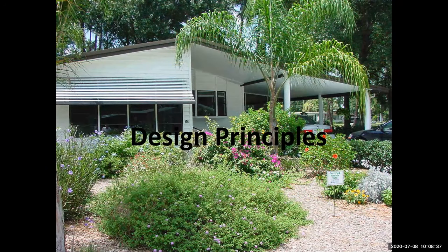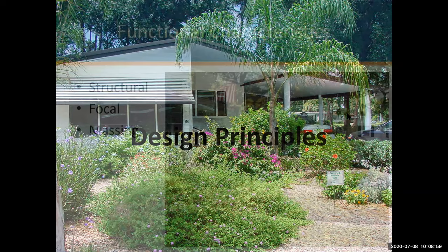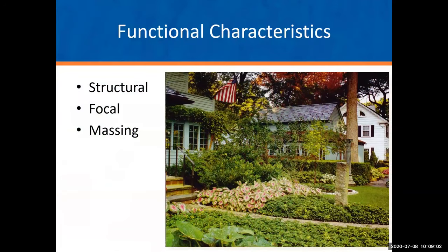Today we're going to talk about design principles. Design principles are the visual qualities that make up a landscape — both what people see and what they feel when observing the landscape. It's the more artistic side of landscape design. We'll have some good pictures today to demonstrate all this. The first thing we're going to talk about is functional characteristics of plants — basically what purpose are the plants serving. They could be structural, focal, or massing.